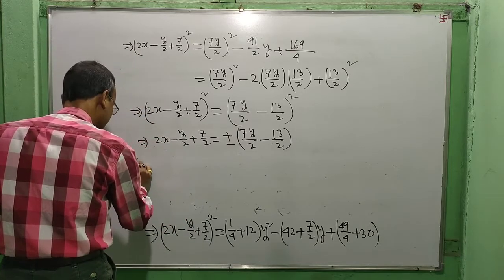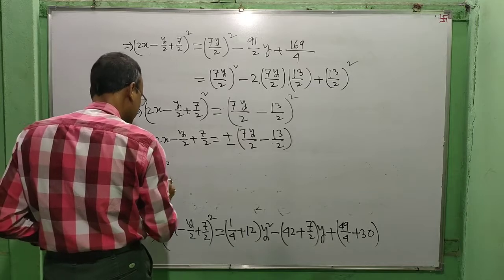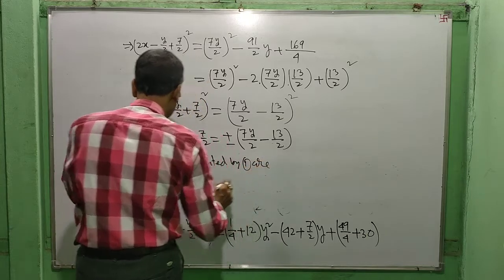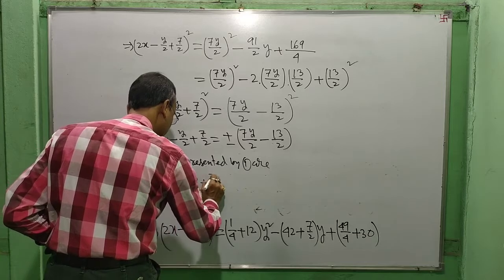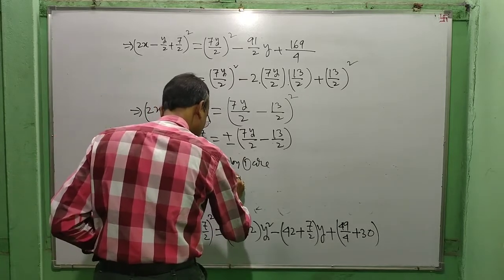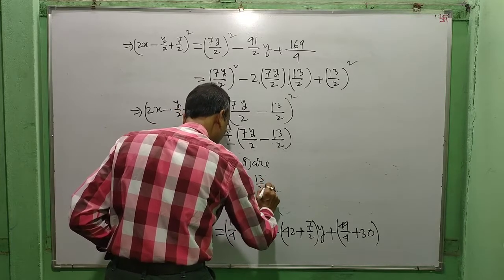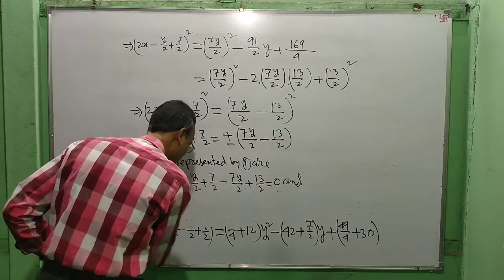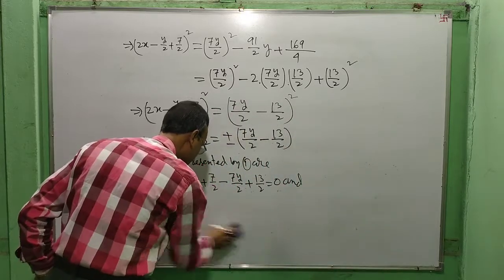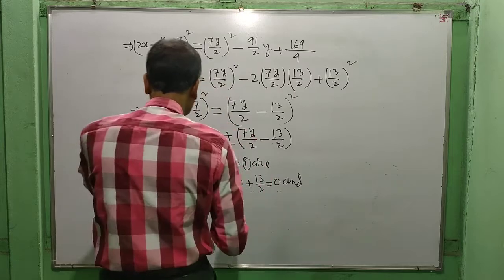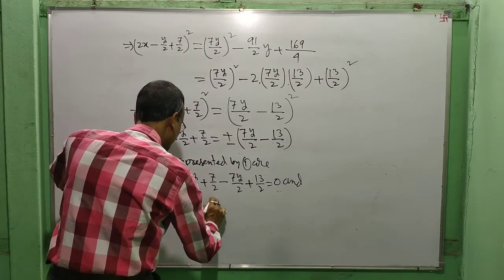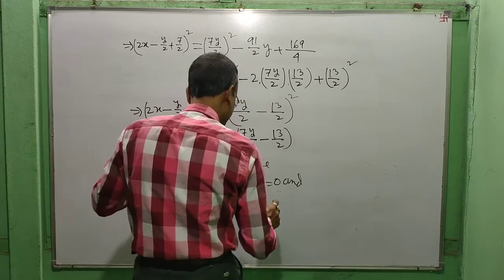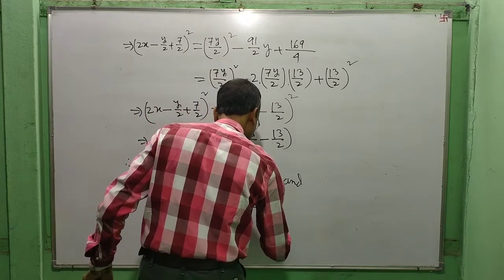This means — where are the lines represented by the combined equation? We get: 2x − y/2 + 7/2 − 7y/2 + 13/2 = 0, and also 2x − y/2 + 7/2 + 7y/2 − 13/2 = 0.